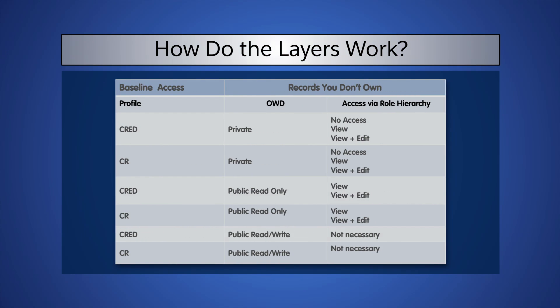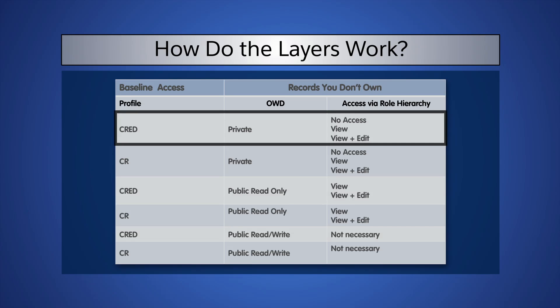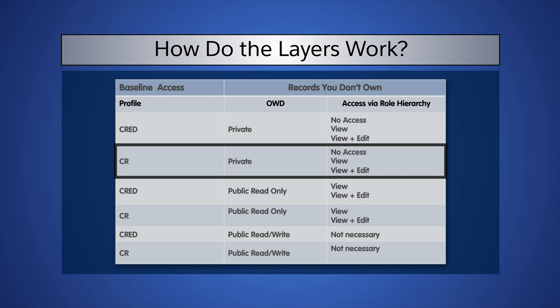If Alan's profile grants him Create, Read, Edit, and Delete permissions on the Opportunity object, and the org-wide defaults are set to Private on Opportunities, then we can grant him any of the three options to Opportunity records below him in the hierarchy. If we change Alan's profile to grant only Create and Read, and leave the org-wide defaults the same, the role hierarchy will offer us the same options. However, even if we choose View and Edit, Alan will still be unable to edit opportunities, since his profile does not grant him that permission. Remember, the role hierarchy cannot grant a user more access than they have through their profile permissions.